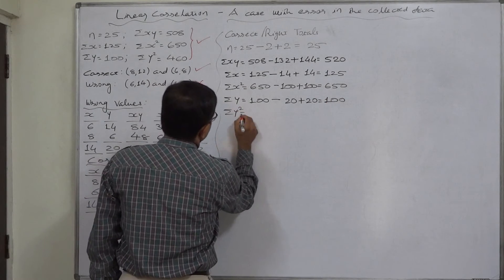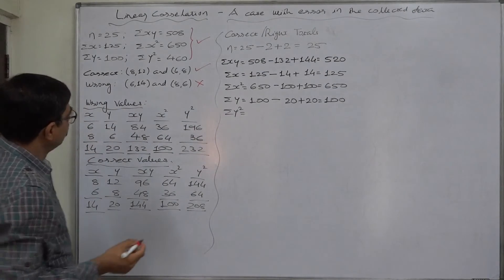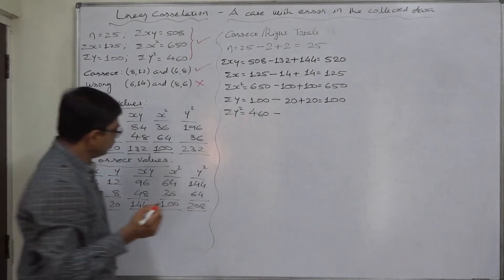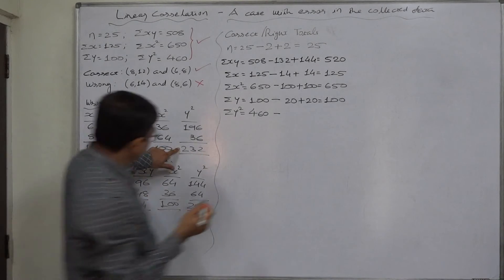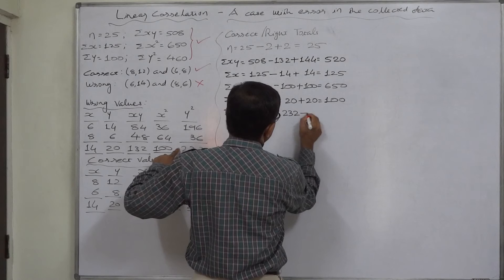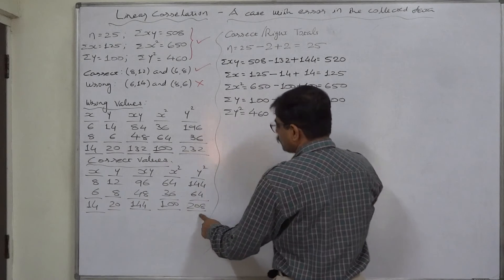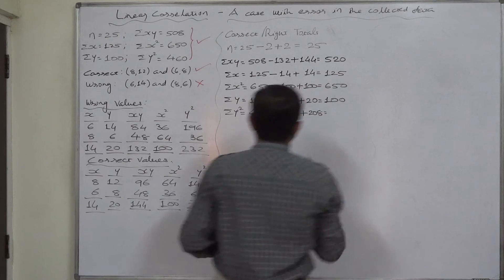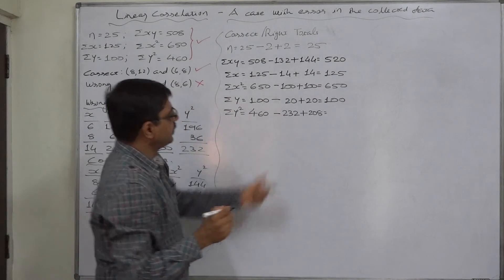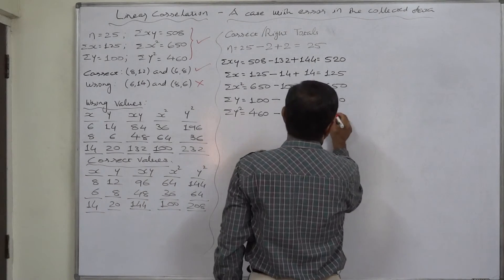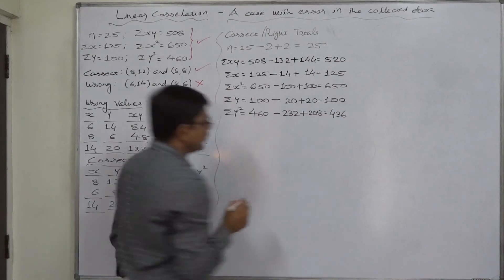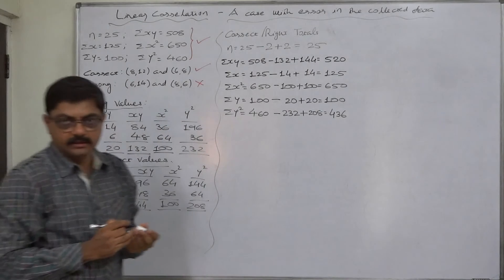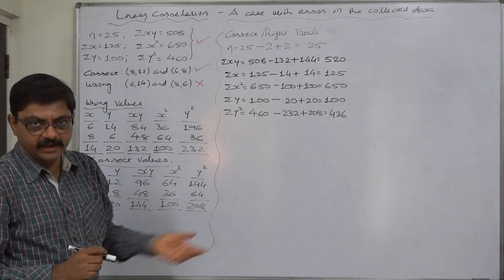And Σy². It is 460 before any rectification. We have to remove the effect of wrong values of y², 232. And we have to add the effect of correct values of y². So ultimately, we are going to subtract 24 from 460. So it will be now 436. All these are now correct values after rectification.